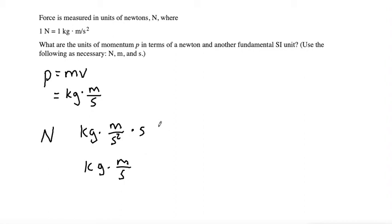So if we're writing this, because kilogram times meter per second squared is the unit of a newton, we can write this as newtons times seconds. And so we've now written the units of momentum in terms of a newton and another fundamental SI unit.